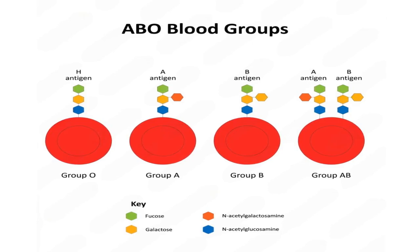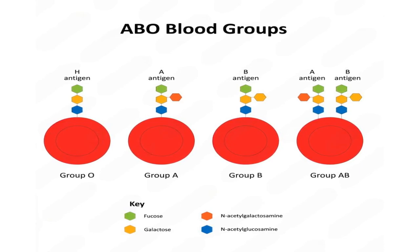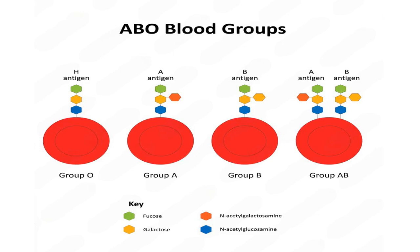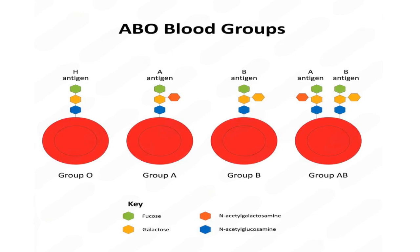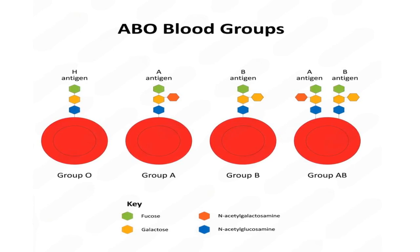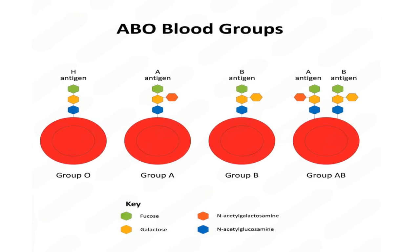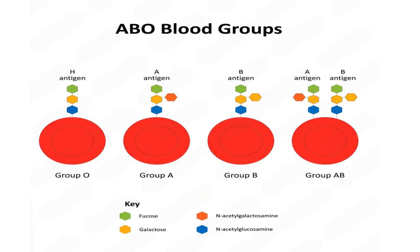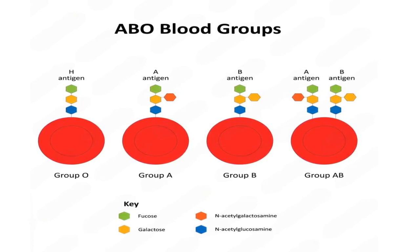Number 3. What is the H antigen? The H antigen is a carbohydrate structure found on the surface of red blood cells. It serves as the precursor for the A and B antigens in the ABO blood group system. In individuals with blood types A and B, enzymes add specific sugar molecules to the H antigen, transforming it into the A or B antigen. Individuals with blood type O have only the H antigen without any modifications.